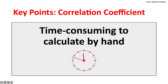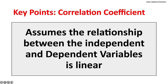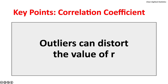Key points about the coefficient of correlation: this measure is time-consuming to calculate by hand. It is assumed the relationship between the independent and dependent variables is linear. If the relationship is not linear, the independent or dependent variables must be transformed. Transforming variables will not be covered in this lecture. Outliers can distort the value of the correlation coefficient.